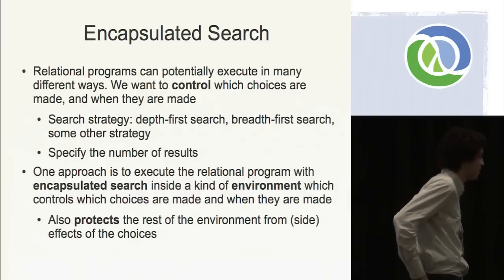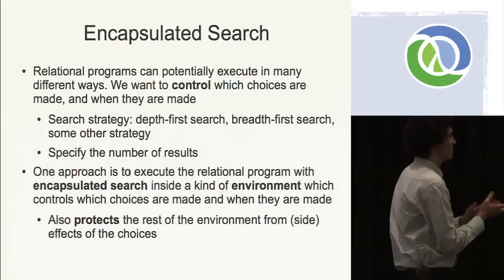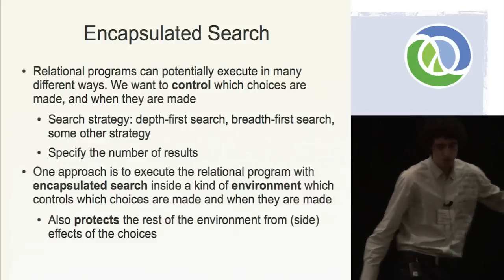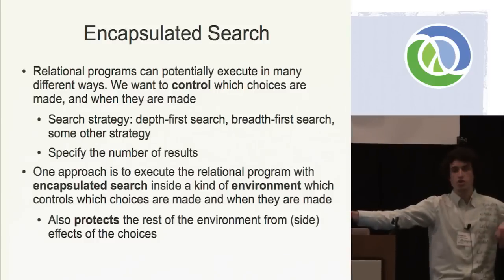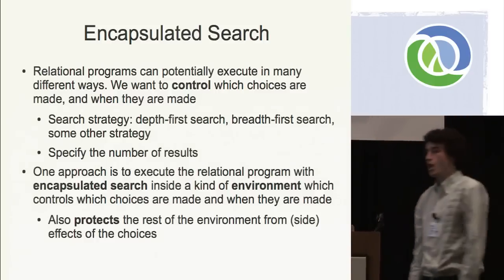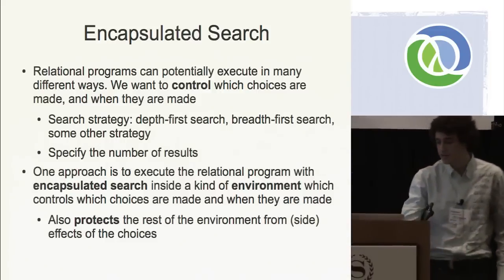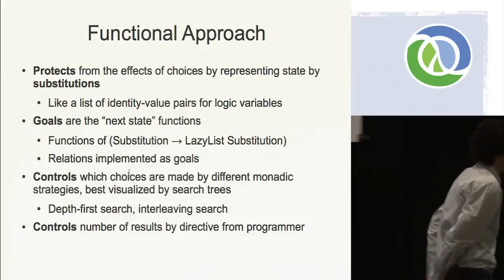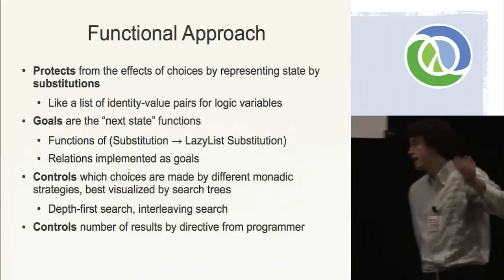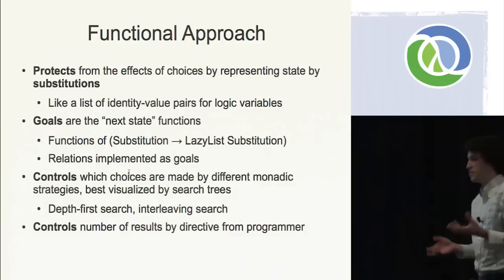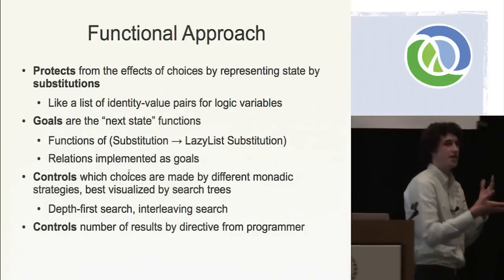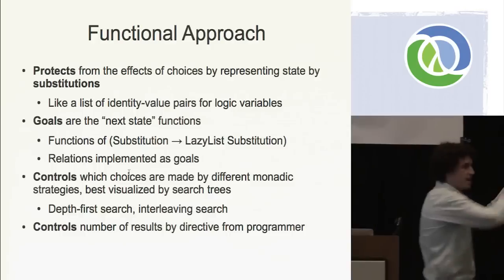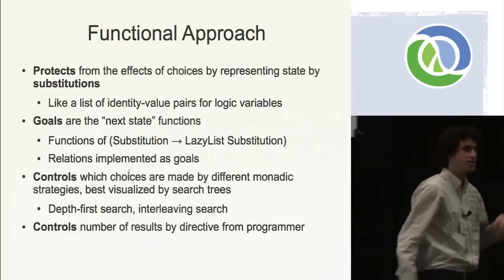One approach is to execute a relational program with encapsulated search in an environment which controls which choices are made and when. Another requirement is that it protects the rest of the environment from side effects of choices — if you go down a branch, you don't want side effects of one branch polluting another. We want to be able to go back in time and undo bindings made to logic variables. One way to implement this is with an extremely functional approach: we can protect from effects of choices by representing states as a substitution — basically passing state through functions instead of having global state. A substitution is like a list of identity-value pairs for logic variables, like "variable v has value one" or "variable a is unbound." It's a snapshot.